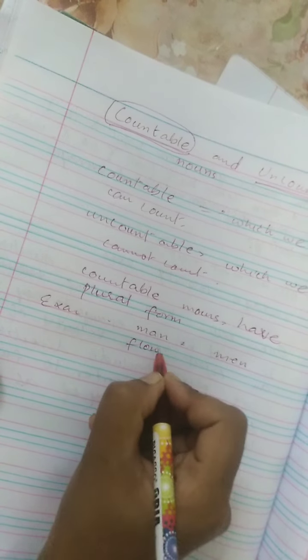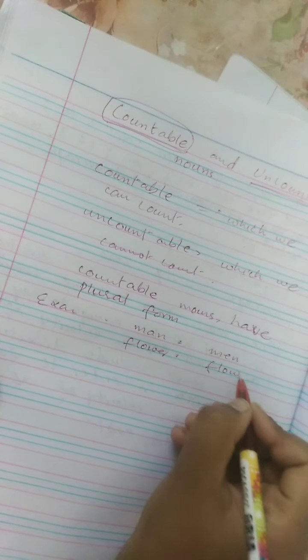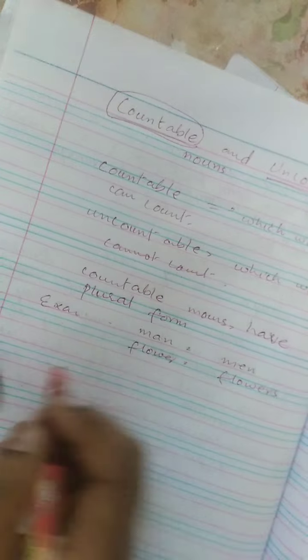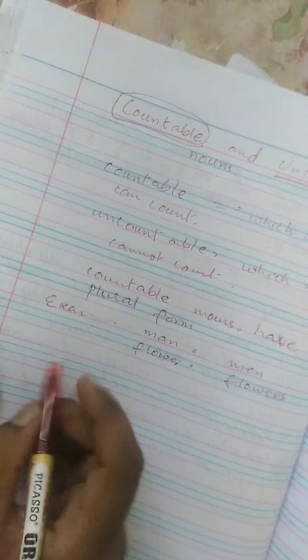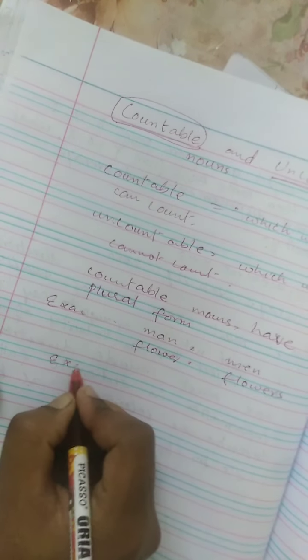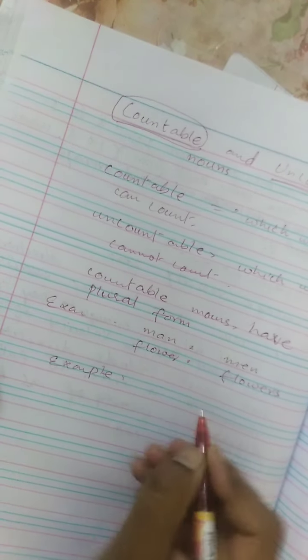Flower is countable, so we make it plural as flowers. But in uncountable noun, there is no plural form. For example, milk.